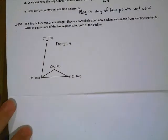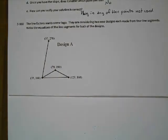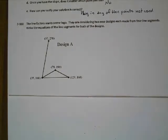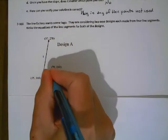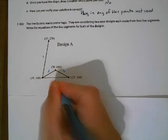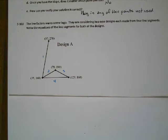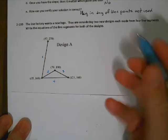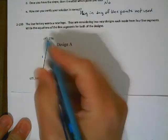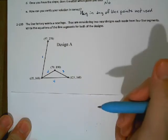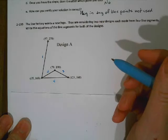So we just have two more problems left. Remember the people who had the factory that made the lines? Well, they came up with a new logo. They've got two designs made out of four line segments each. We're going to find the equations of those line segments — I'll do the first one. So I want to find the equation of this line segment. I'm going to use y equals mx plus b, but I need the slope first. I'll do the change in y over the change in x: 278 minus 168 over 57 minus 35.